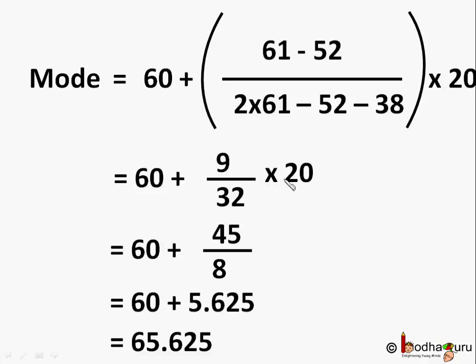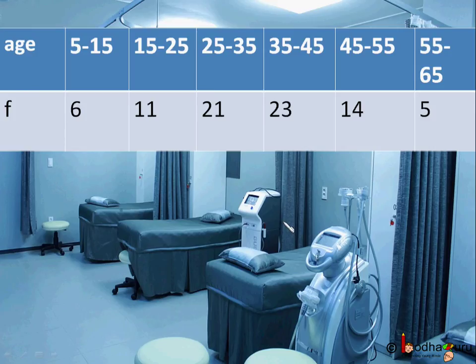Let's take another example. Cancer is on the rise. Pollution, unhealthy diet—there are many reasons for it. This table shows the age of patients admitted in a hospital with cancer during a year.